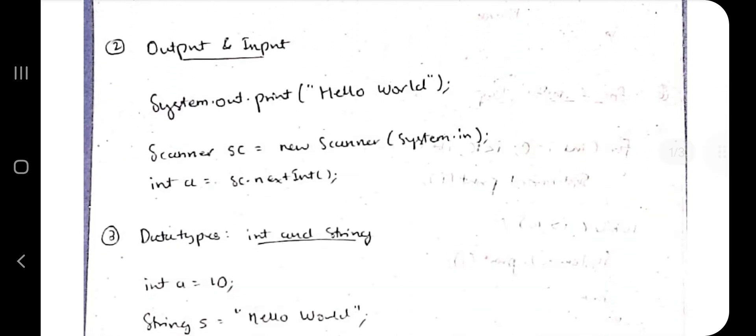The next thing is the output and input. For the output, you have to write System.out.print, then whatever you want to print you will write here. If you want to take the input, you have to create a Scanner class. Scanner class is created by the keyword 'scanner' with capital S here, and after that the scanner name - you can keep any name here - and after that new Scanner System.in. This is the fixed format.